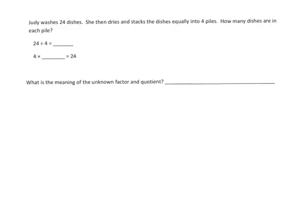And our last example for this video: Judy washes 24 dishes, and then she dries them and stacks them equally into four piles. How many dishes are in each pile? So if we were going to draw this, this four piles means we're going to have four equal groups. So we could either do 1, 2, 3, 4 to represent each of the four piles.